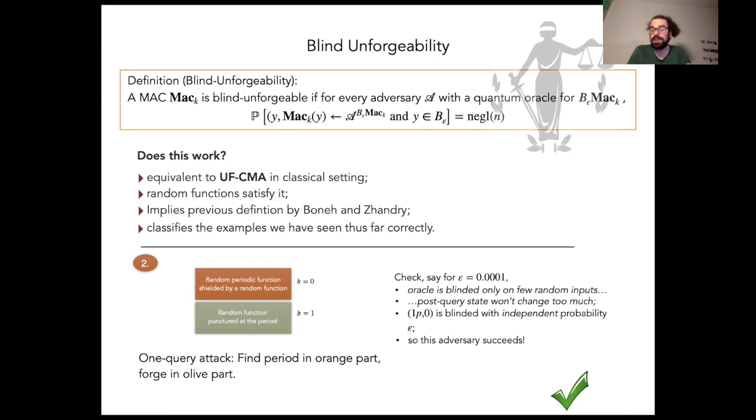The forgery message, on the other hand, which is completely separate from the query that the adversary makes, is blinded with independent probability epsilon. So this adversary, in fact, succeeds with small probability.